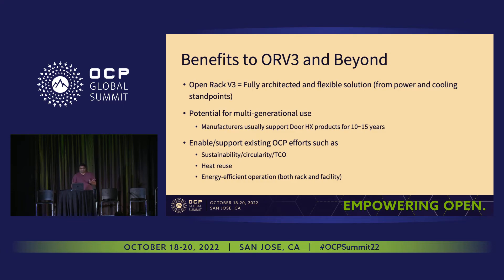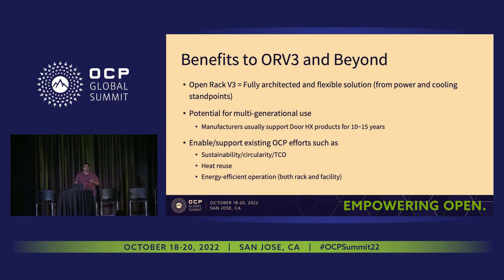Let's talk about benefits to Open Rack V3 and beyond. Open Rack V3 from the start has had a focus on enabling liquid cooling, so there's definitely a benefit to defining a door heat exchanger solution specific to it — giving us a fully architected and flexible solution when any end user decides to adopt Open Rack V3. Talking with vendors, we acknowledge potential for multi-generational use. A door heat exchanger solution could be in operation for 10 years or longer, and HPC customers in particular have very stringent reliability requirements — something that could be worked into this specification.